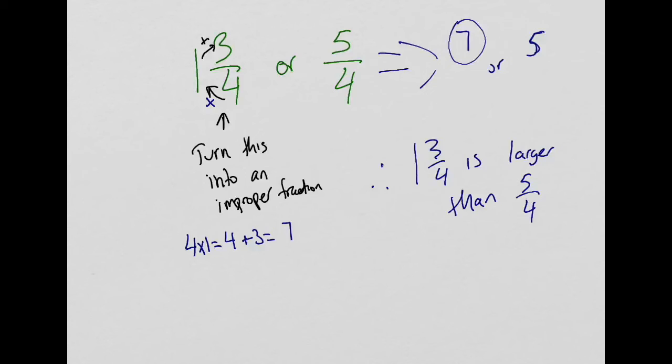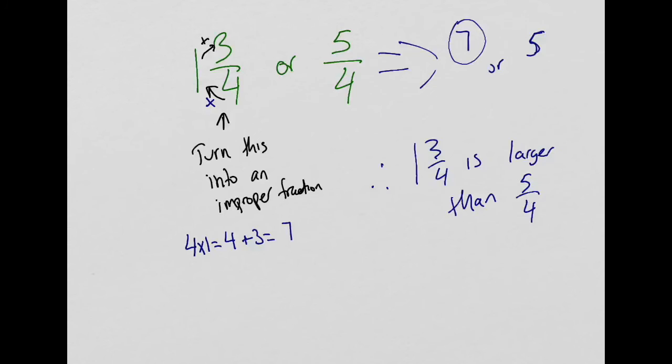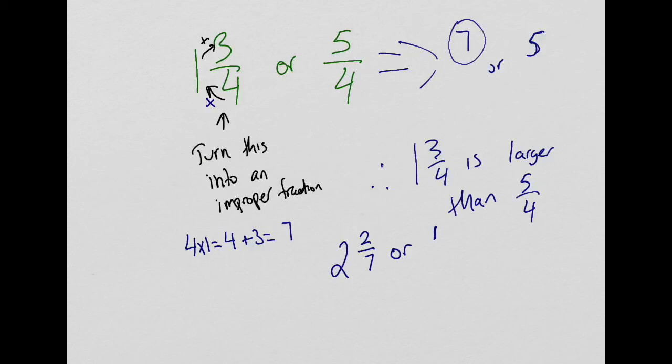Now this is the reason why I like using improper fractions. So I'm going to give you an example now with different denominators: two and two-sevenths or fifteen quarters. We have two different denominators here, so first thing we need to do is change this into improper. So multiply and then you add: seven times two plus two. Seven times two is fourteen plus two is sixteen.